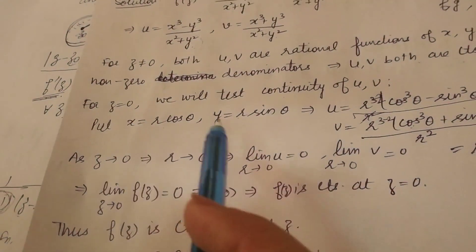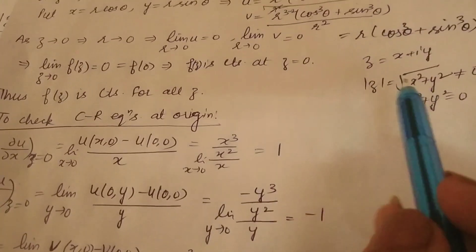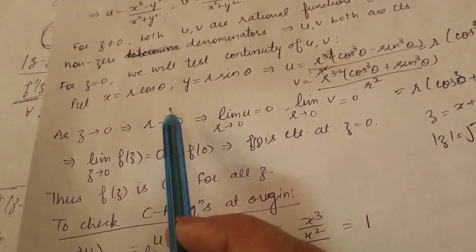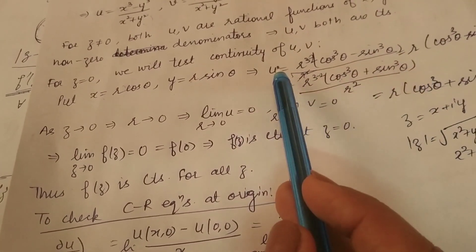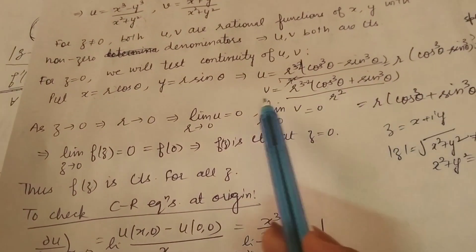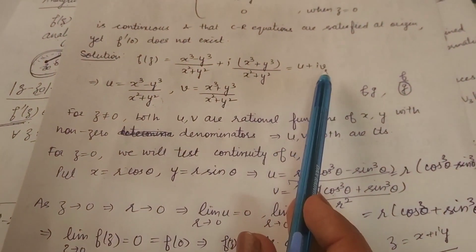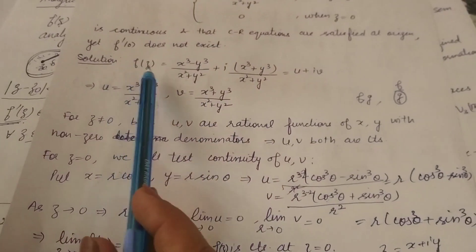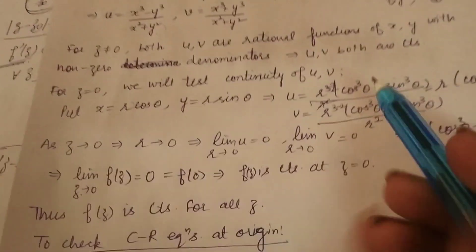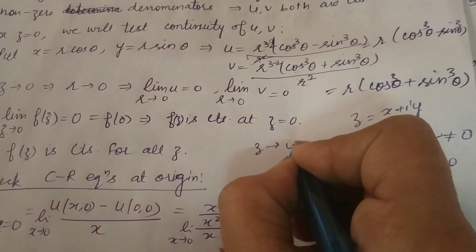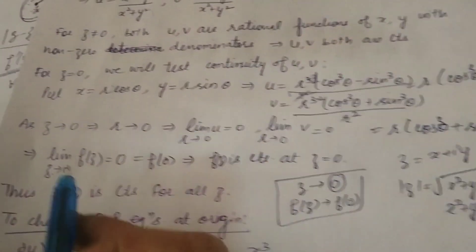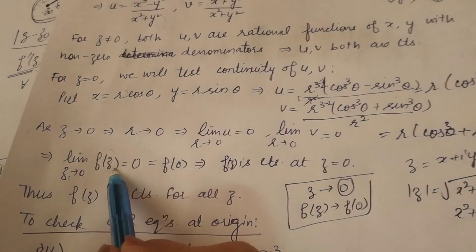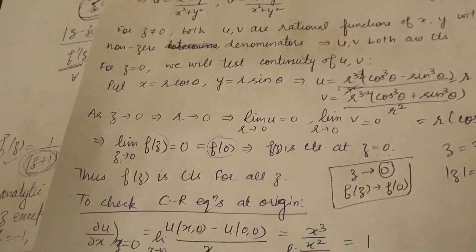Now, when z approaches 0, since z = x + iy, x and y both approach 0, which means r approaches 0. As r → 0, u = r(cos³θ − sin³θ) → 0 and v = r(cos³θ + sin³θ) → 0. Since f(z) = u + iv, and both u and v approach 0, f(z) → 0 as z → 0, which equals f(0). Therefore, the function is continuous at z = 0.